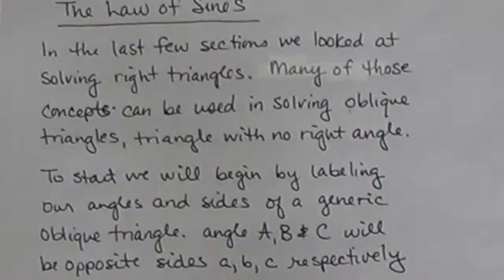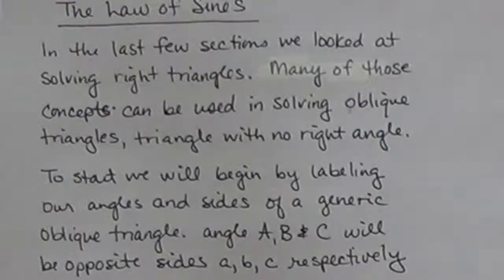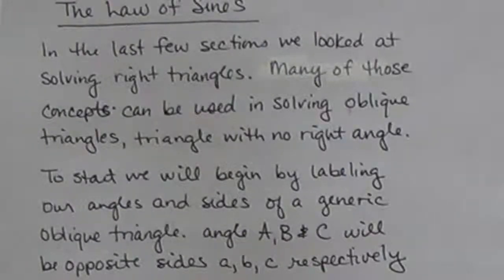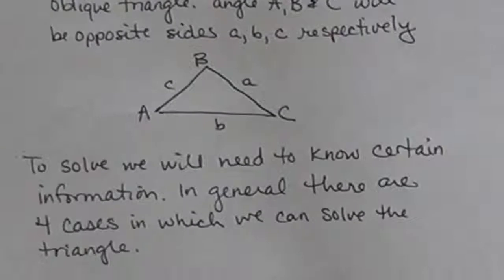To start, we'll begin by labeling our angles and sides of a generic oblique triangle. This is something you want to do for any problem where the sides are not labeled to begin with — just to keep track of which side length and which angle correspond to each other. Angle A, B, and C will be opposite the sides little a, b, and c respectively, as shown in this picture here.